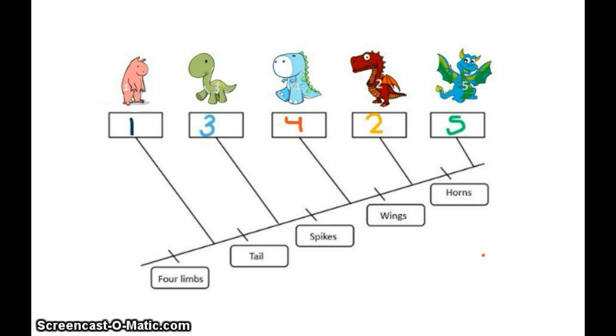We know things like organism two and five share a common hornless ancestor, and that the trait of tail appeared way before the trait of wings.